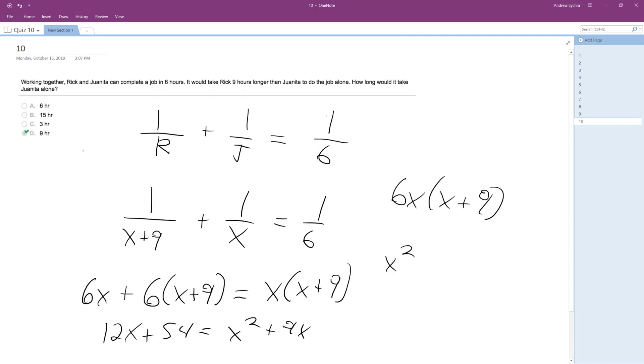So if we move everything over to the right side, X squared minus 3X minus 54 equals zero.